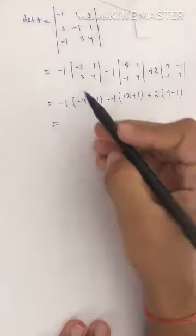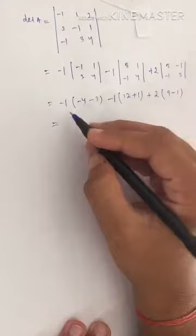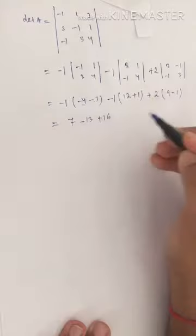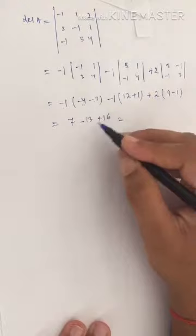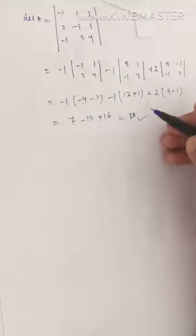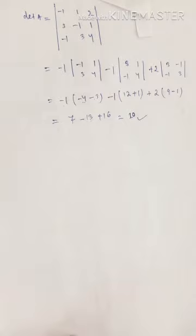Calculating: −1×(−4 − 3) = −1×(−7) = +7; minus 1×(12 − (−1)) = minus 13; plus 2×(9 − 1) = plus 16 minus 13 equals... the result is plus 10. In this way you can calculate the determinant of any three cross three matrix. If you liked this video, please like, share, and subscribe to the channel. Thank you.